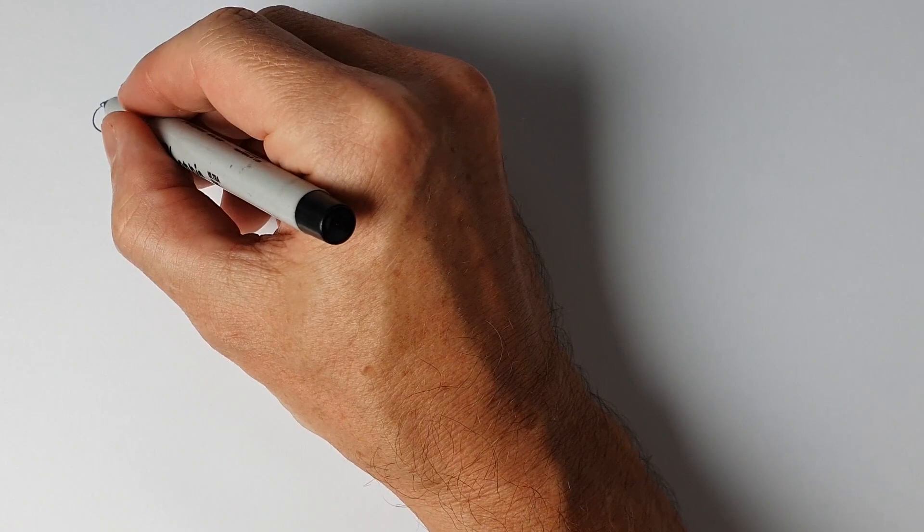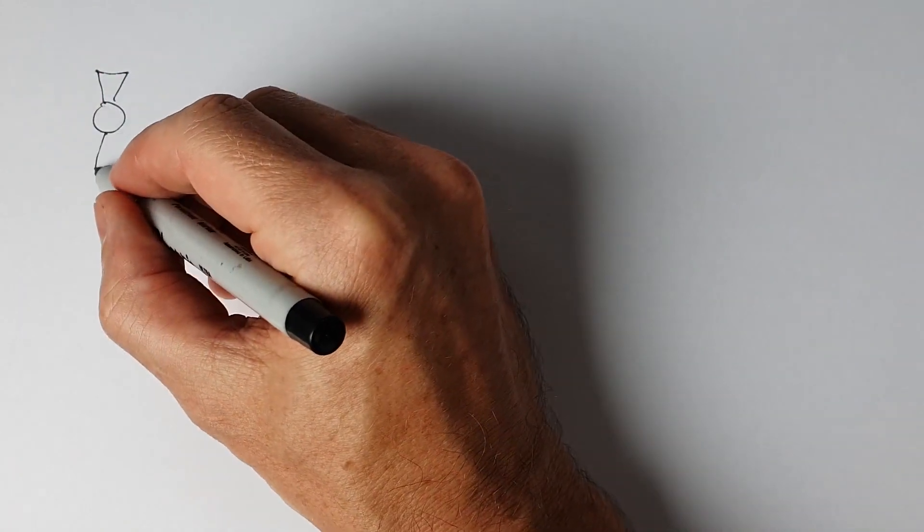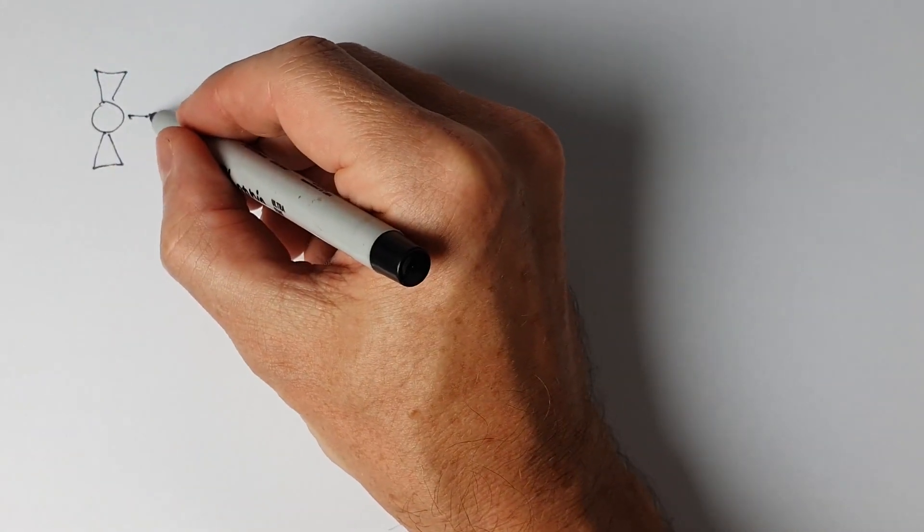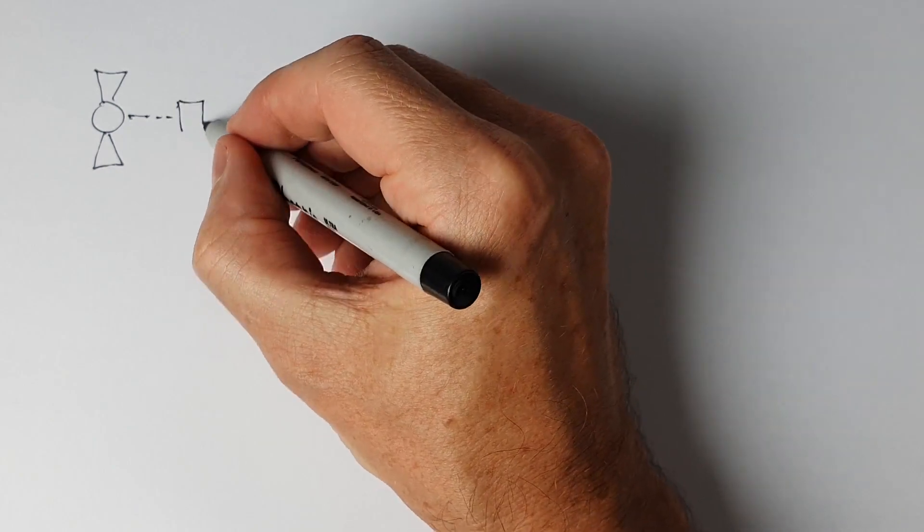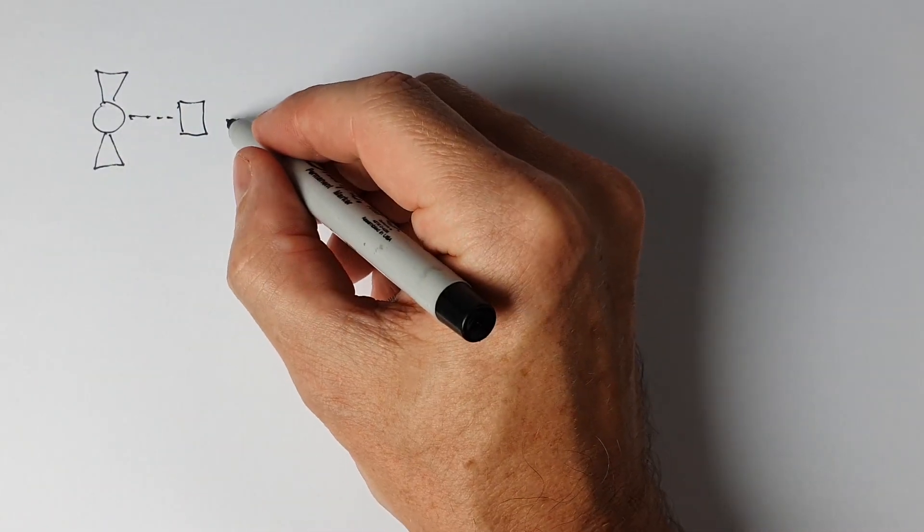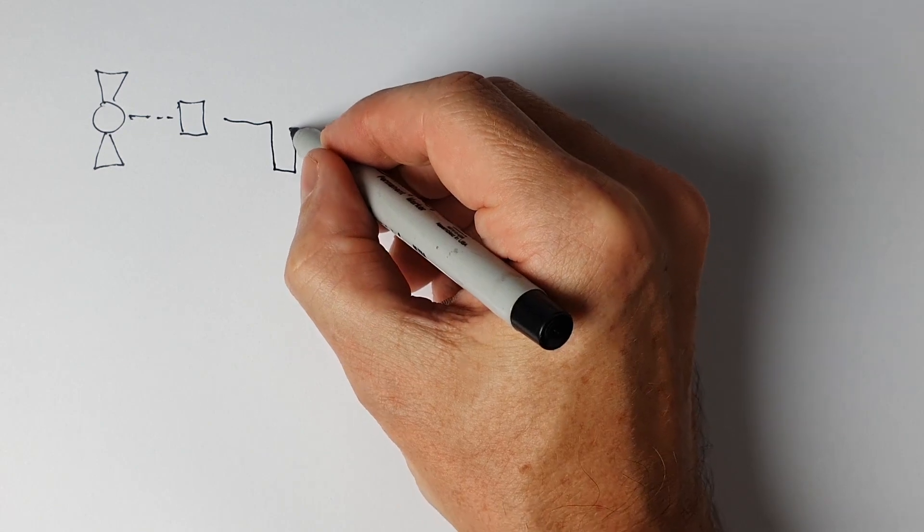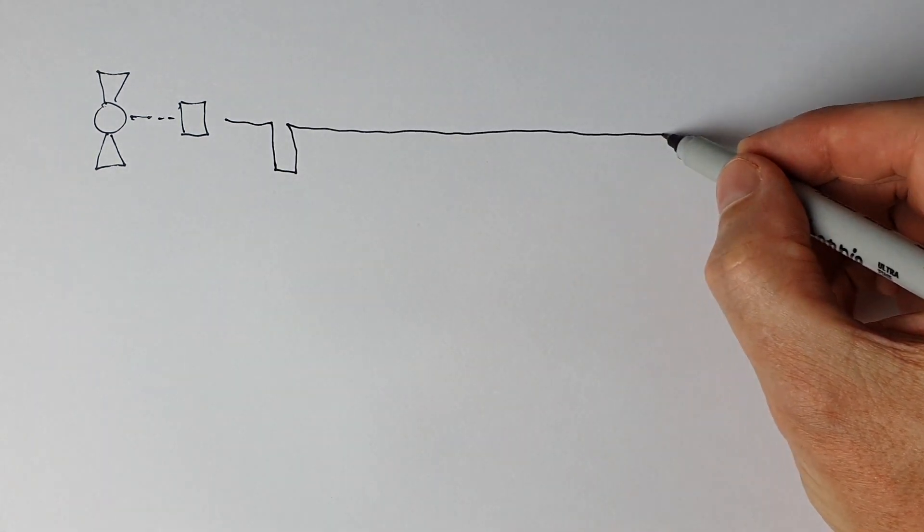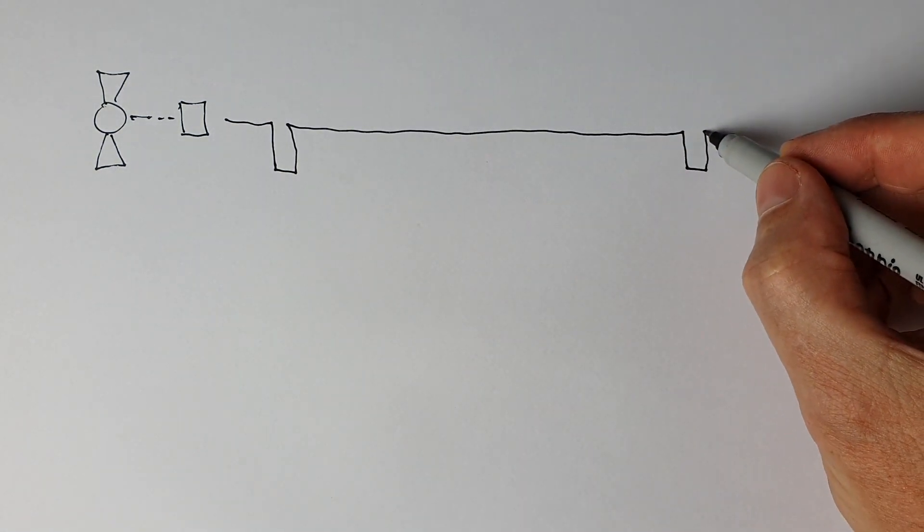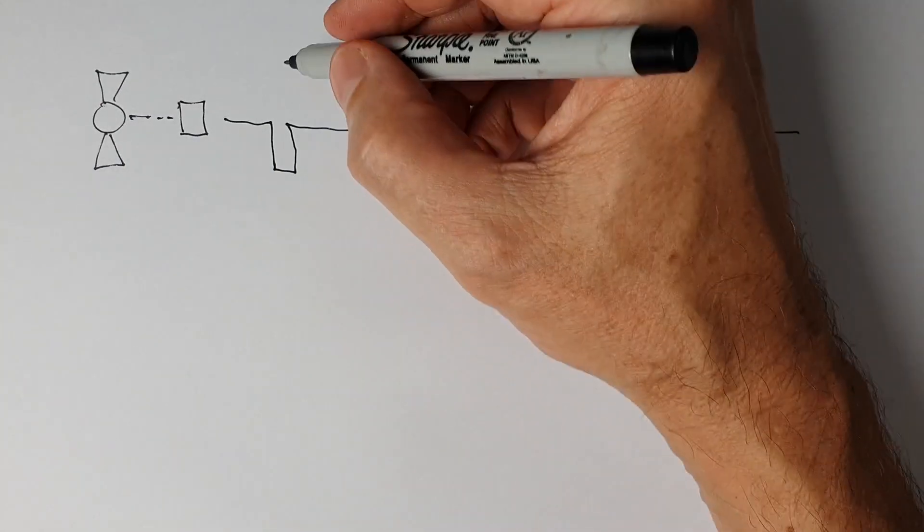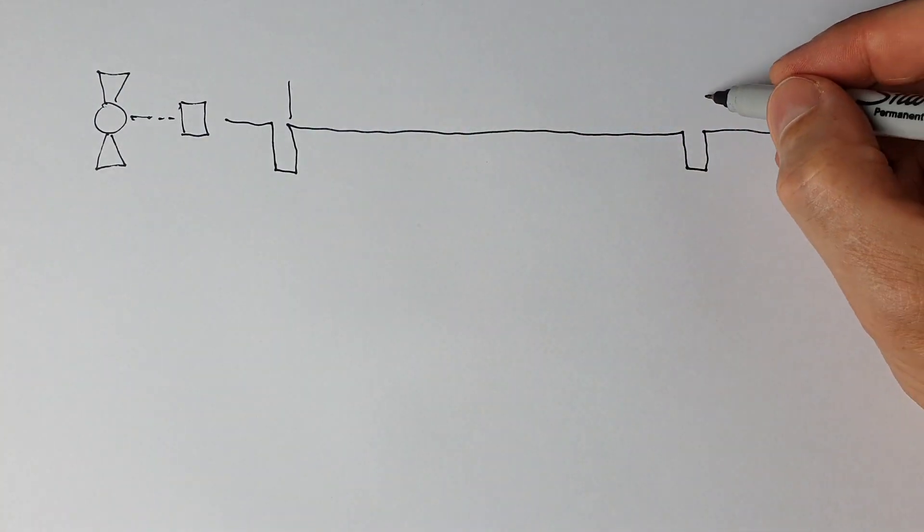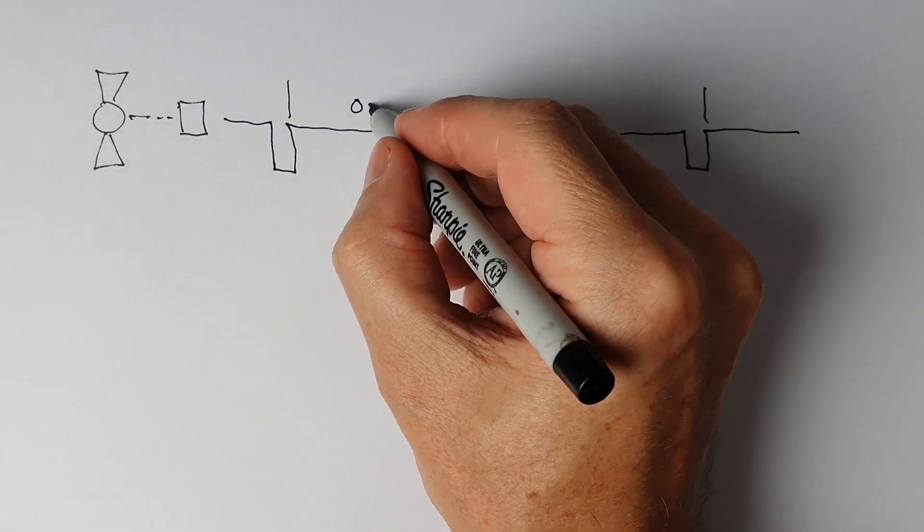A rotating shutter has a Hall effect sensor that senses the rotation and gives us a pulse once per revolution. So this pulse is a reference. So the time that it takes is one revolution.